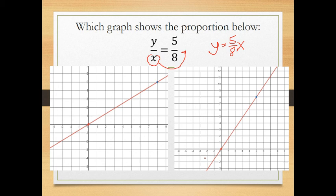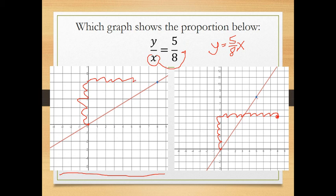For the proportion y/x = 5/8, the slope is 5/8. Go up 5 and over 8 from a point. Checking one option: going up 5 and over 8 shows that point is not on that line. Checking option A: going up 5 — 1, 2, 3, 4, 5 — and over 8 — 1, 2, 3, 4, 5, 6, 7, 8 — lands on the line. So this line represents this proportion.